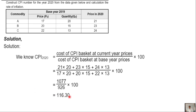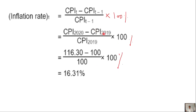The CPI of 2019 is taken as the base year with a value of 100. Using the formula, the CPI for 2020 is calculated. The result is 116.31%, which gives an inflation rate of approximately 16.31%, and that is our required answer.